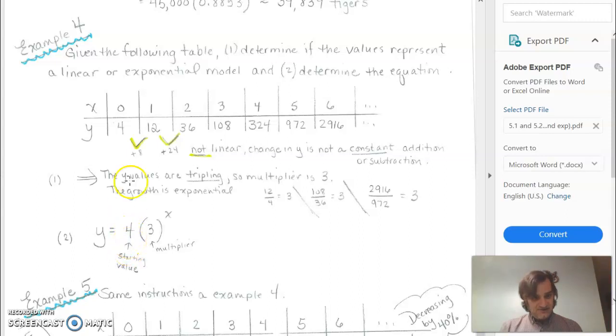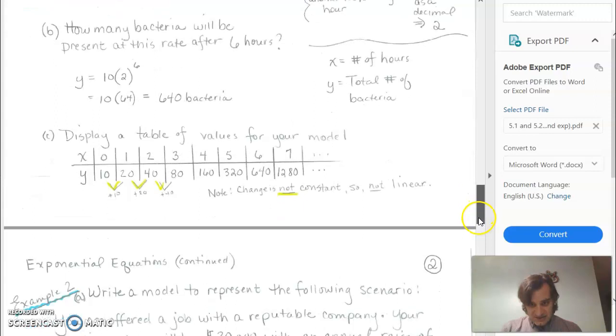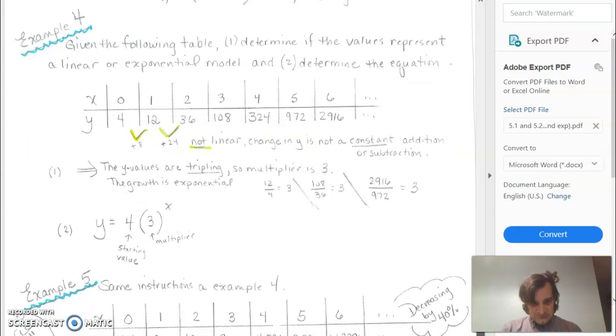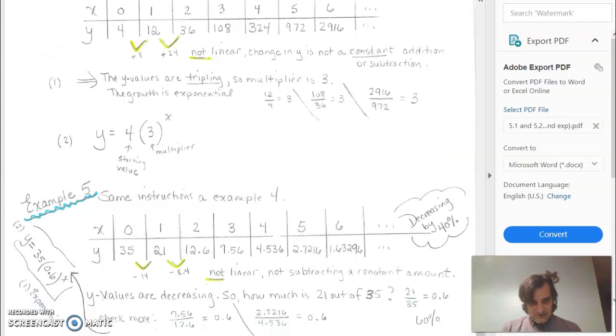So the function looks like it's exponential. It looks like a starting value of 4. That's where the table started. And we're multiplying by 3 each time. So it's 4 times 3 to the x.